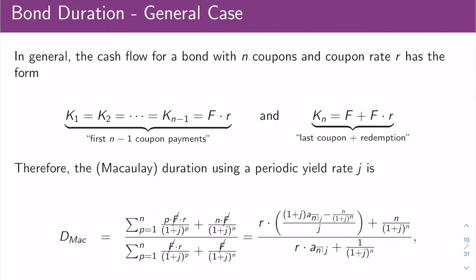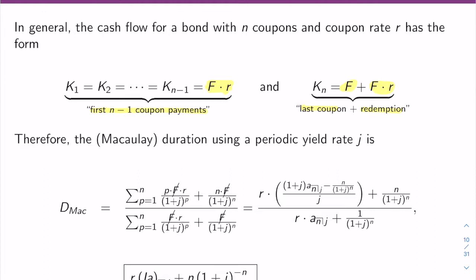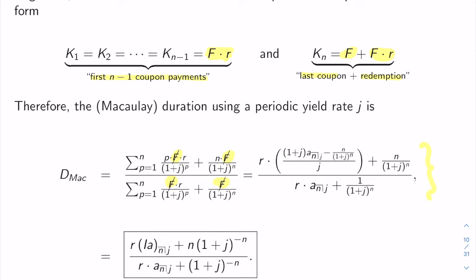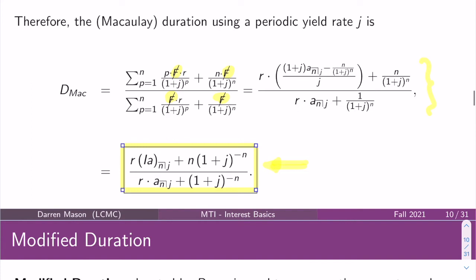For a general bond with level coupon payments F times the coupon rate for the first N-1 periods, and face plus coupon at maturity, plugging into the duration formula causes all F's to cancel. Using the increasing annuity simplification, you arrive at the clean formula: Macaulay duration equals the coupon rate times the increasing annuity I-double-dot angle N at yield J, plus N times (1+J)^(-1), all divided by the bond price (excluding face value, since it cancels). This is likely your easiest formula for finding Macaulay duration.